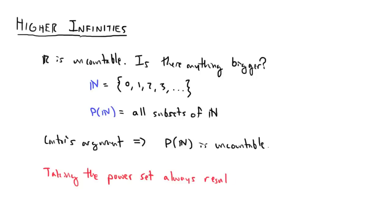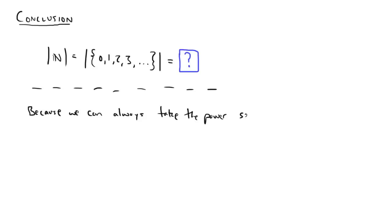In fact, taking the power set always results in a bigger set than the original. Now, we haven't really answered the question that we started with, which was how big are the natural numbers, but we've uncovered something even better. Because we can always take the power set, there have to be infinitely many sizes of infinity. Pretty cool, huh?